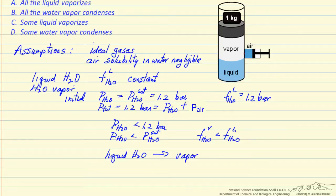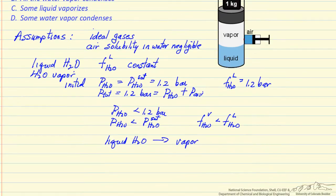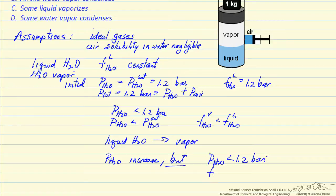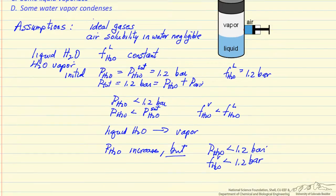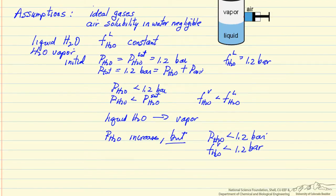We no longer have vapor-liquid equilibrium — water is going to evaporate. As water evaporates, the partial pressure of water increases, but the partial pressure of water is always going to be less than 1.2 bar, which means the fugacity of water in the vapor phase is always going to be less than 1.2 bar. Since the fugacity is less than 1.2 bar, we can't have liquid in equilibrium with it at this temperature. So all the water will evaporate.